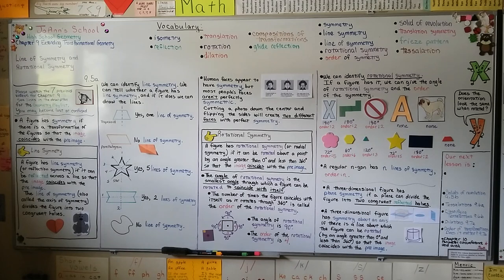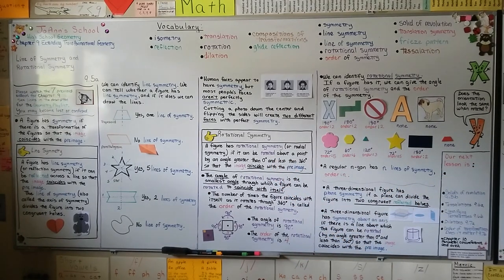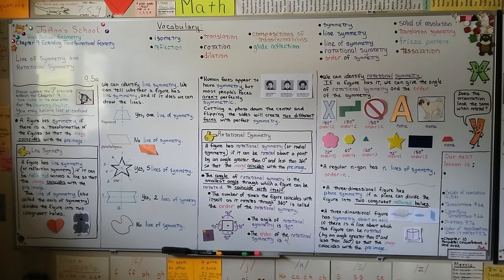I hope this was informative and that you were able to take notes. I hope you understand line of symmetry, rotational symmetry, and order. Have a great day — I'll see you for the second part of this lesson, 9.5b, where we're going to talk about solids of revolution. Then we're going to talk about tessellations and dilations before moving into Chapter 10. Bye.